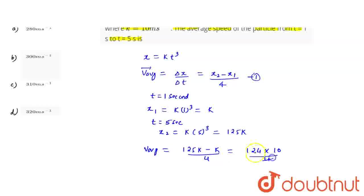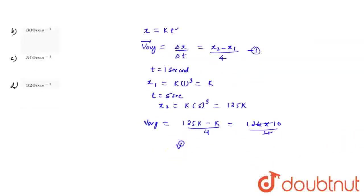Guys, if we solve this, what value are we getting for v average? That is 310, and the unit will be meter per second. So 310 meter per second is the right answer.